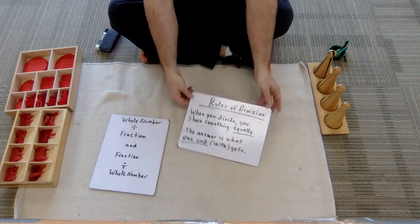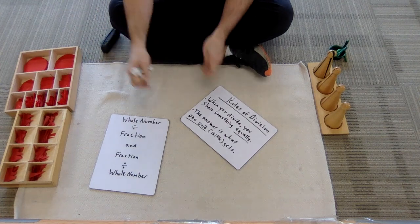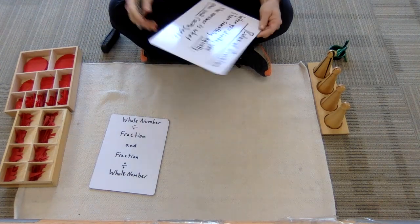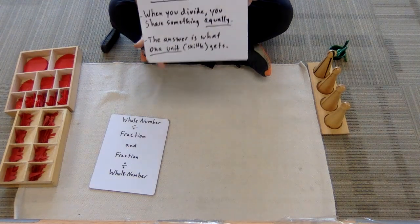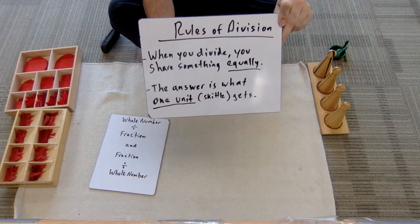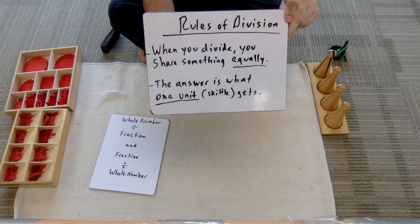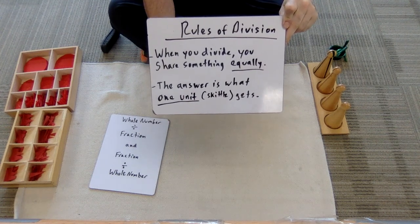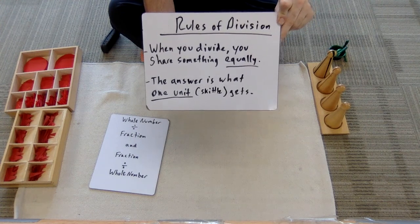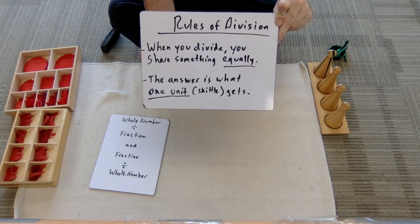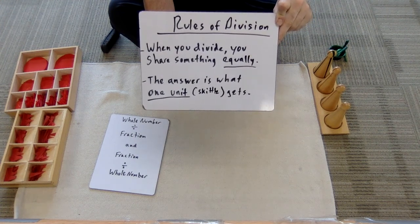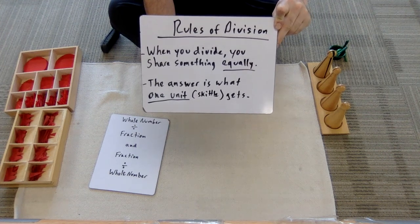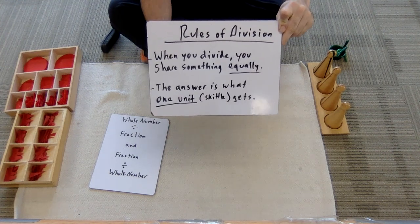I'm going to share the rules of division with you, especially when using the Montessori materials, because it's almost like magic. The key is the use of the skittles and understanding the rules of division. When you divide, you share something equally, and with the Montessori materials the answer is always what one unit or one skittle gets.